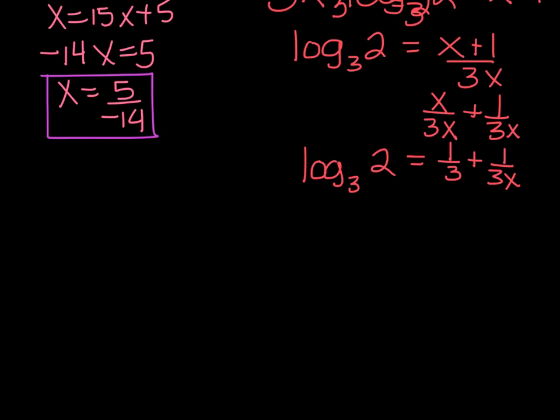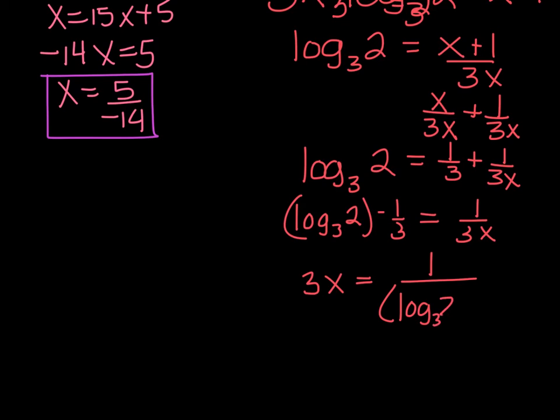but equals 1 third plus 1 over 3x. I'm trying to isolate x. So now I'm going to get that number. I'm going to keep writing log base 3 of 2, subtract 1 third equals 1 over 3x. And then I need to cross multiply, don't I, to get x on the right side of the equation. So 3x equals 1 over this number, log base 3 of 2. Remember that's just a single number, minus 1 third.